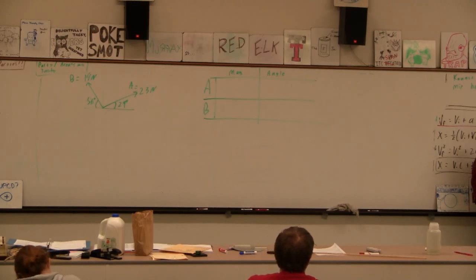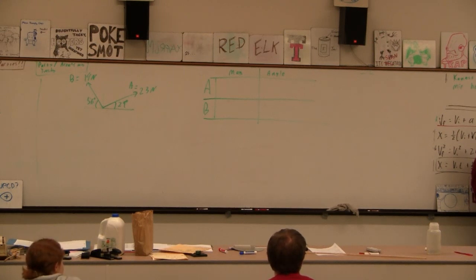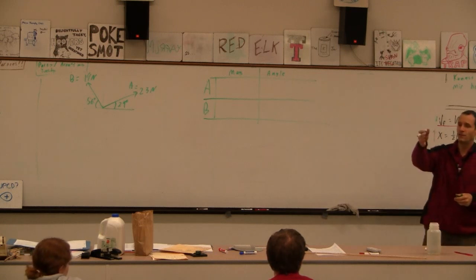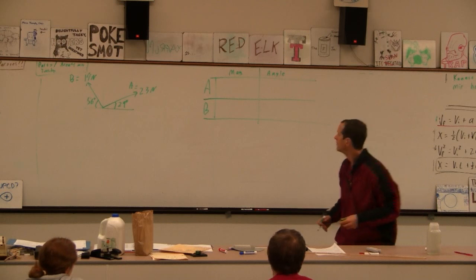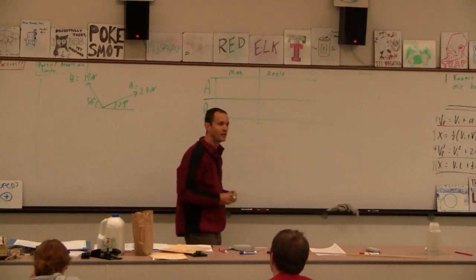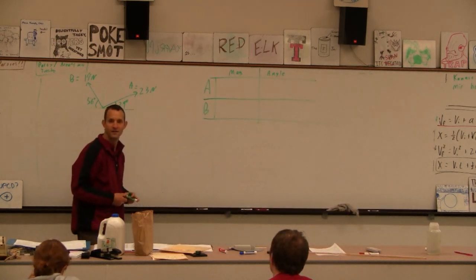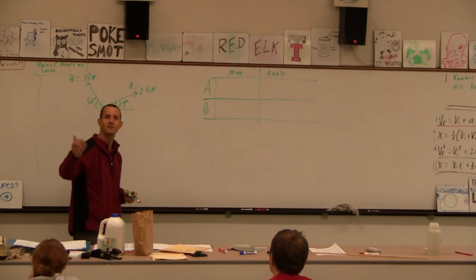This little F right here, this guy is the equilibrant, so we're trying to figure out what F is. We're going to do that. That is the problem: to find what F is that puts it in equilibrium. We're calculating F, that's the point.